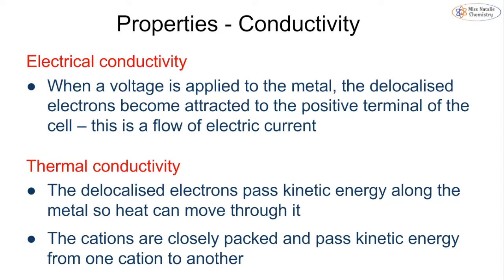There are two different types of conductivity: electrical and thermal. For electrical conductivity, when a voltage is applied to a metal, the delocalized electrons become attracted to the positive terminal of the cell and we get a flow of electric current. For thermal conductivity, it's again the delocalized electrons that help — they can pass energy through the metal in the form of kinetic energy. The cations are also very closely packed, so they can also transfer kinetic energy from one cation to another. As the metal is heated, the cations and delocalized electrons gain more kinetic energy, bump into others, and pass the energy further along.